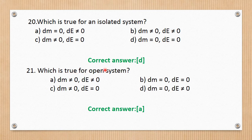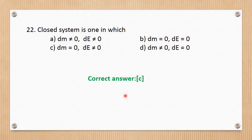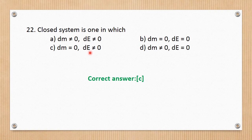For a closed system, matter cannot enter the system (dM = 0), but energy can transfer (dE ≠ 0). The correct answer for the closed system question is C, where dM equals zero.